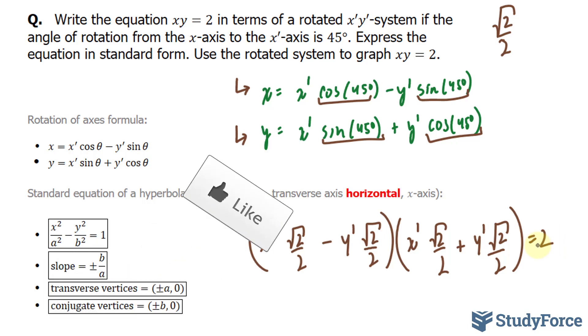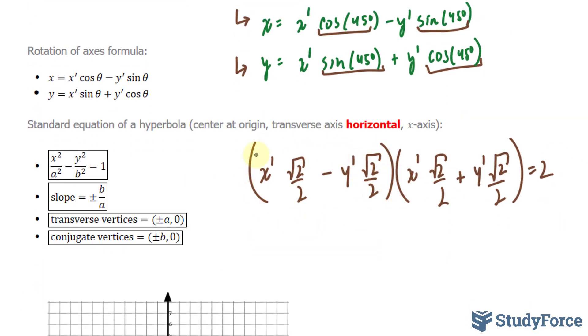Now our goal is to write this in standard form. So as you can see in this parenthesis, we have √2/2 that is common factorable. So I'll pull that out, leaving us with x' - y'. And over here I'll do the same thing, where I have √2/2, x' + y' = 2.